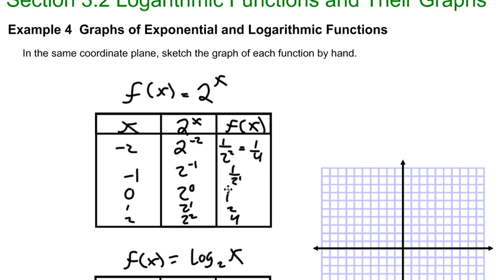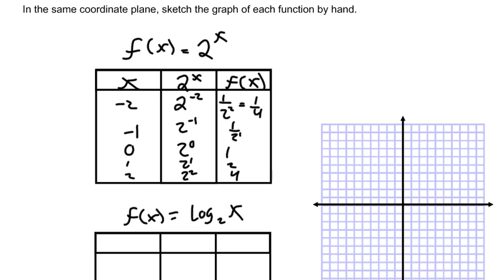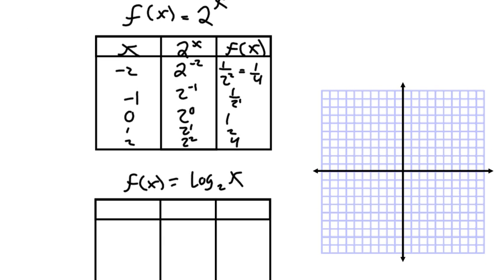So let's go ahead and graph this. These are our coordinate points: negative 2 and one-fourth, negative 1 and one-half, 0 and 1, 1 and 2, 2 and 4. Let's see what kind of graph these are going to create.